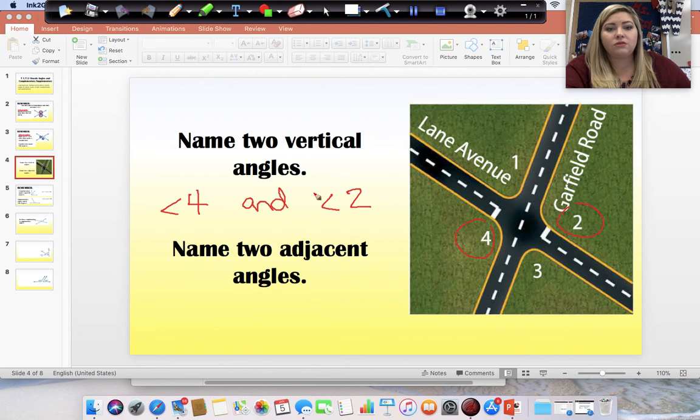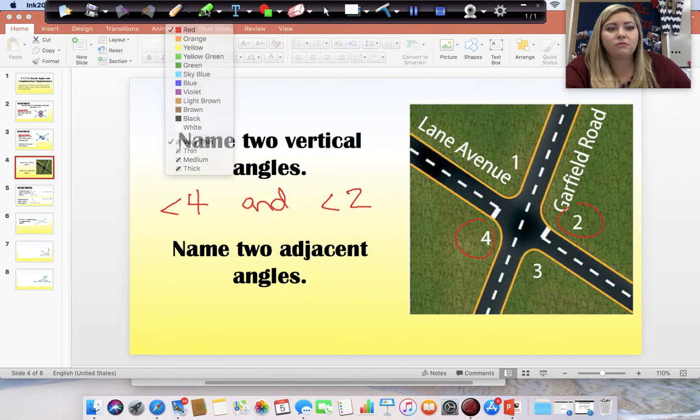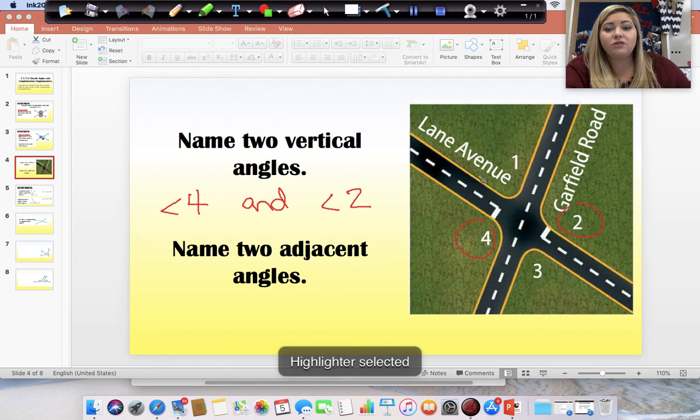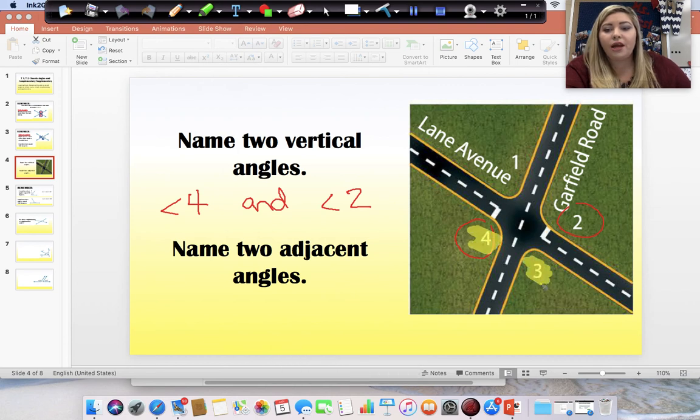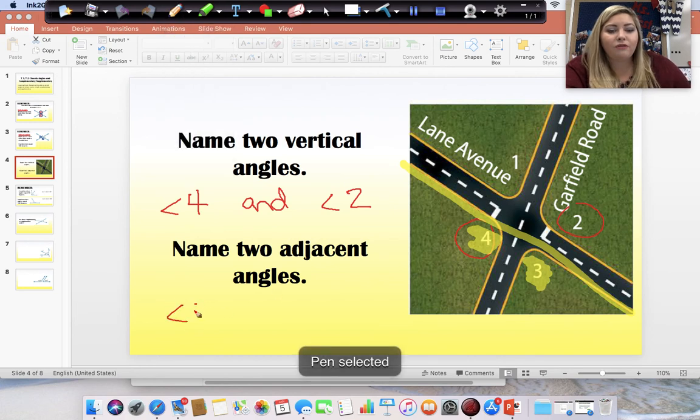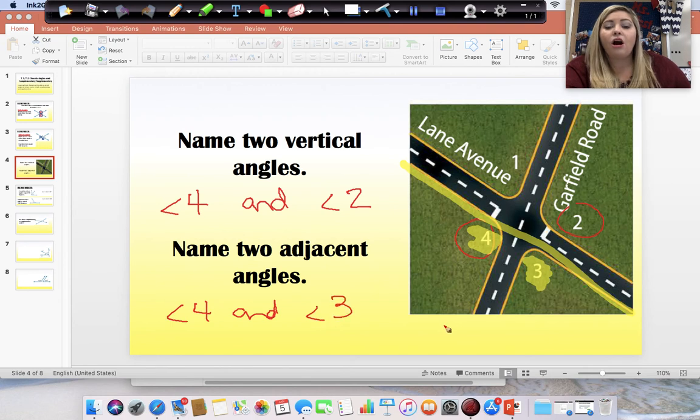Name two adjacent angles. Adjacent angles. I'll try a highlighter this time. Adjacent angles are right next to each other. So, the four and the three are right next to each other and they form a straight line. Even though my line was not straight. So, angle four and angle three are adjacent.